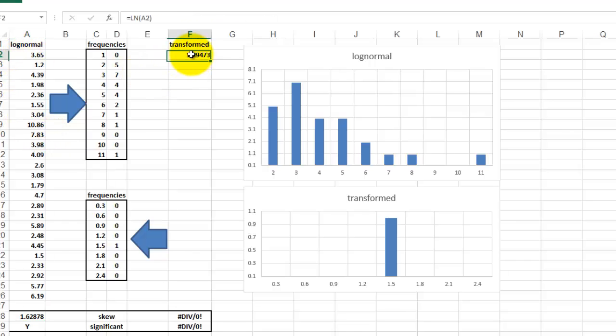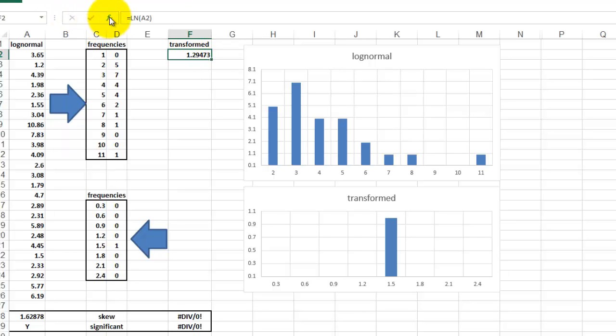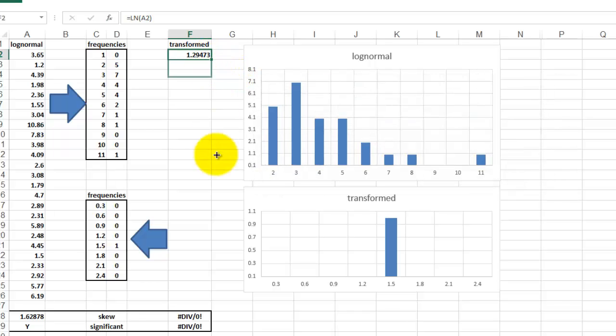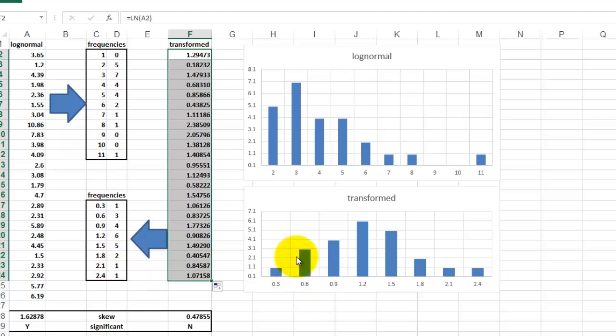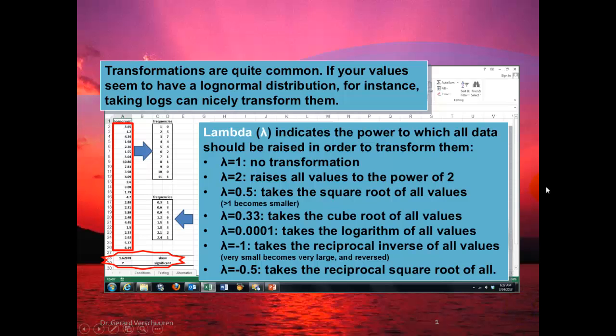I tried a linear transformation again, based on the natural logarithm. So this is the formula, very simple, based on A2. And I copy that formula downwards, plot their frequencies, and notice how we got a transformed set of data. Transformations are quite common.